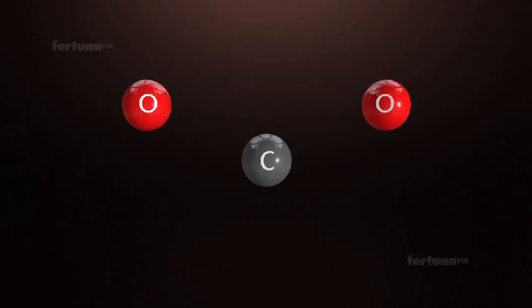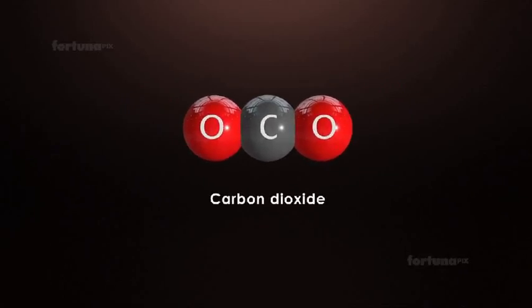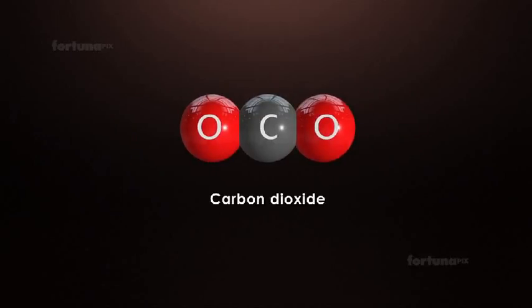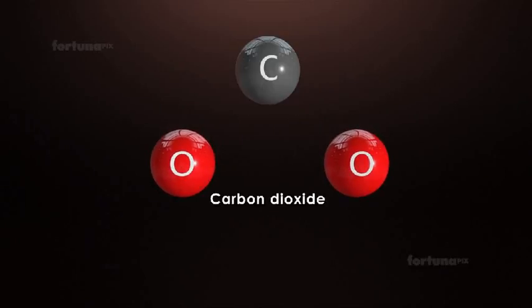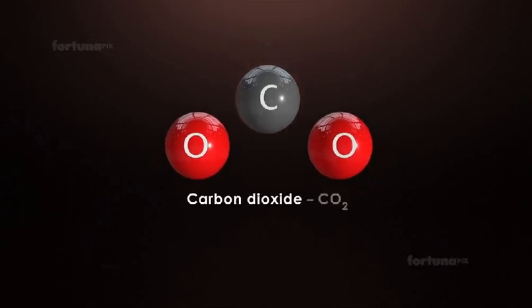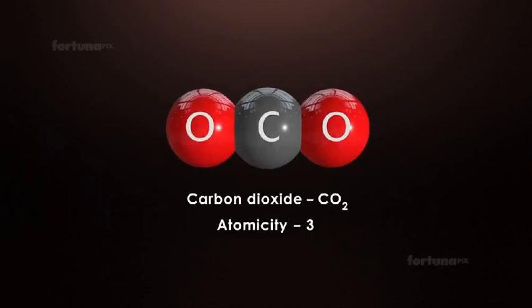When the atoms or molecules from 2 or more different elements combine, they will form a compound. Carbon dioxide is a compound made of 2 different atoms: carbon and oxygen. Carbon dioxide contains 1 carbon atom (C) and 2 oxygen atoms (O2), giving us the molecular formula CO2. Carbon dioxide's atomicity is 3, because it contains 1 carbon and 2 oxygen atoms.